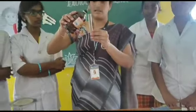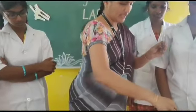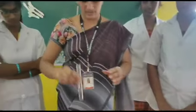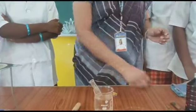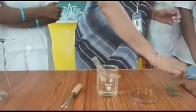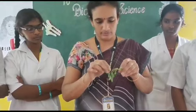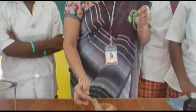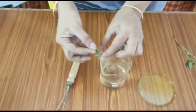We have to pour some methylated spirit into the test tube, which is placed inside the beaker containing water. We also need one or two leaves, which we have to place in the test tube containing methylated spirit.